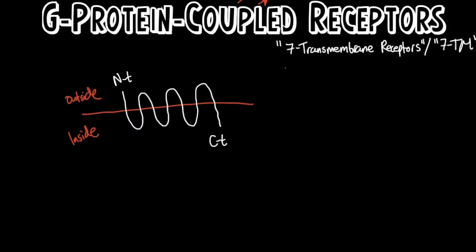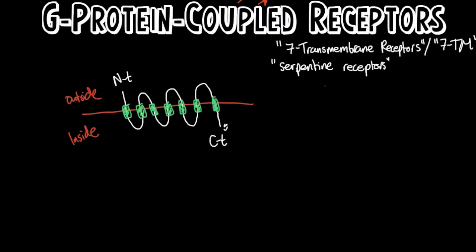And because they kind of snake through the membrane, they are occasionally called serpentine receptors. And because the part of the polypeptide that actually crosses the cell membrane is an alpha helix — I'm colouring them in now in green — GPCRs are also called heptahelical receptors.